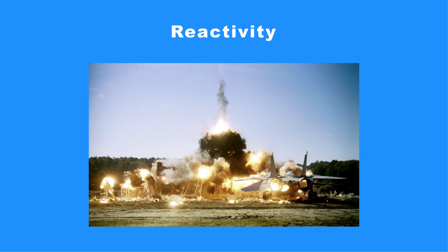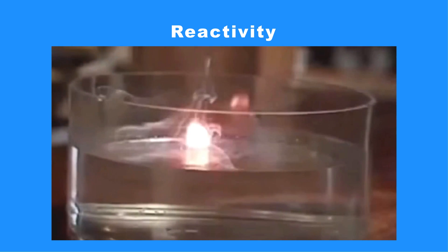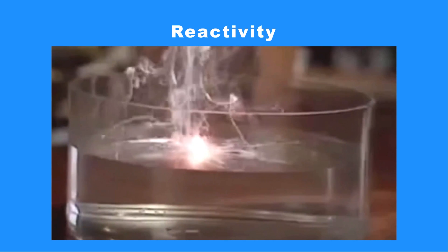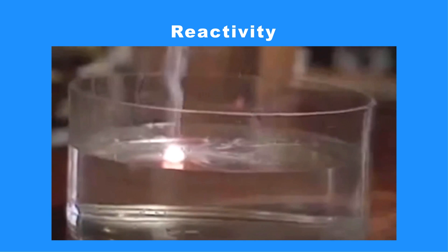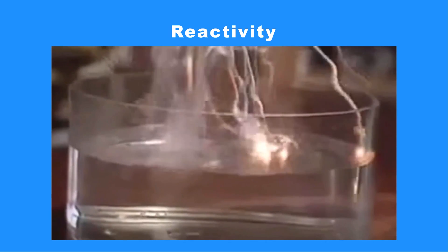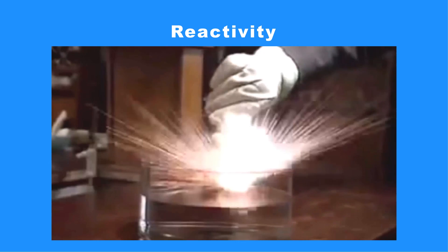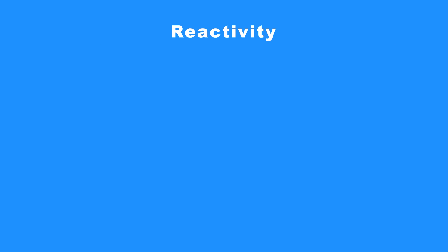Reactivity: Wastes that are hazardous due to a reactivity characteristic may be unstable under normal conditions, may react with water, may give off toxic gases, and may be capable of detonation or explosion under normal conditions or when heated. EPA has assigned D003 as the waste code for reactive hazardous waste.